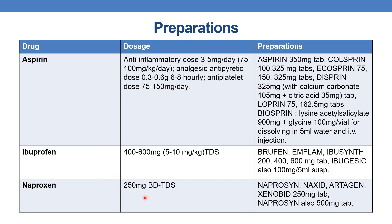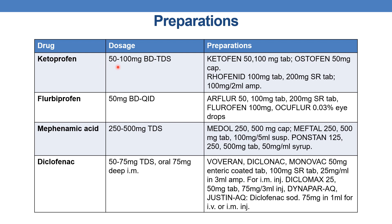The next drug is naproxen. The dose is 250 mg twice a day. Marketed preparations are Naproxen, Naxic, Artegan, and Xenobid available in 250 mg tablet, and also in 500 mg tablet. The next drug is ketoprofen. The dose is 50–100 mg twice or thrice a day. Preparations are Ketofen in 50 and 100 mg tablets, Ostofen in 50 mg capsule, and Trophinin in 100 and 200 mg sustained release tablets and 100 mg per 2 ml ampoules.